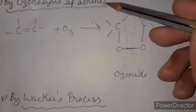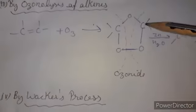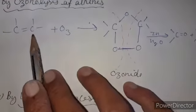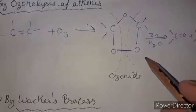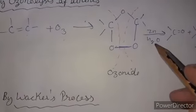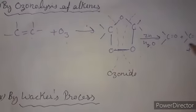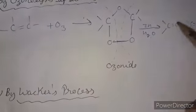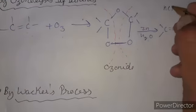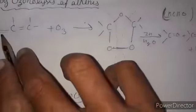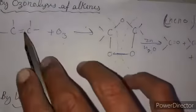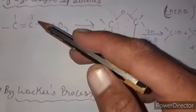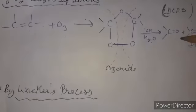The next method is ozonolysis of alkenes. When we react an alkene with ozone, an ozonide intermediate forms. Further reaction with zinc in the presence of water gives two carbonyl-containing molecules. If both carbons of the double bond have hydrogen atoms, two molecules of formaldehyde form. If one side has a CH₃ group, one molecule of acetaldehyde and one of formaldehyde form. If both carbons have one alkyl group, two molecules of acetaldehyde form. If all carbons toward the double bond are alkylated, two ketone molecules form.